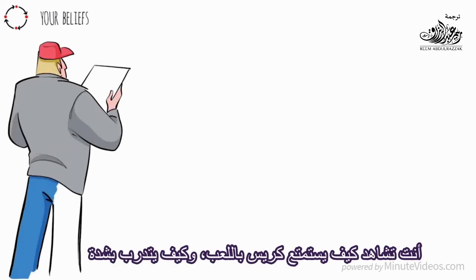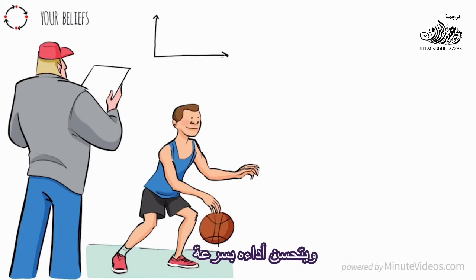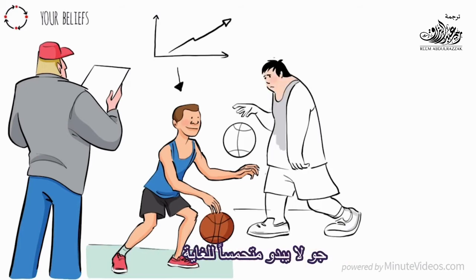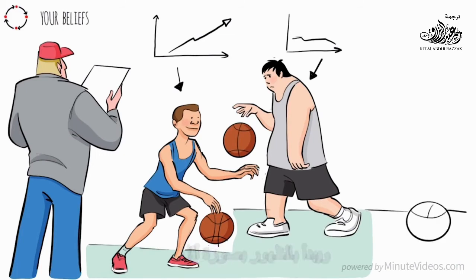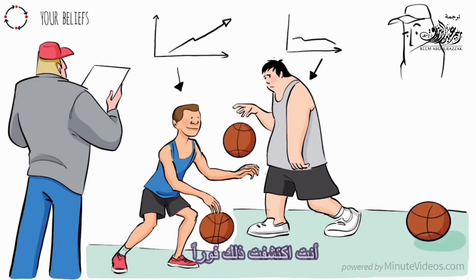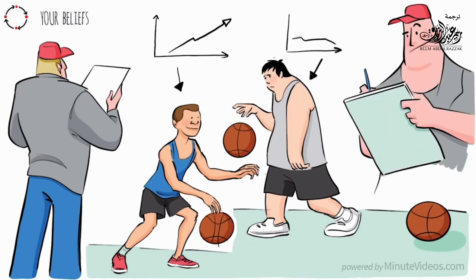You see how Chris enjoys playing, how he trains hard, and shows a fast increase in his performance. Joe seems not to be very motivated — his skills don't increase as much and he starts to show up less. You knew it right away. Thank God your instincts were right.